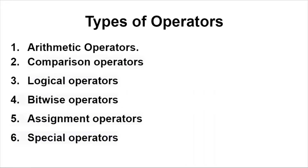Next we have to study types of operators. We have six types of operators in Python. They are arithmetic operators, comparison operators, logical operators, bitwise operators, assignment operators, and special operators.